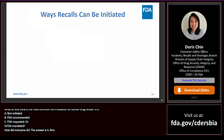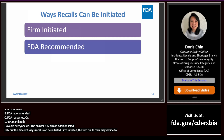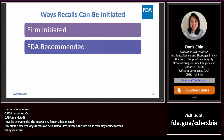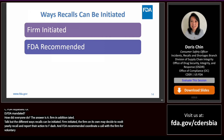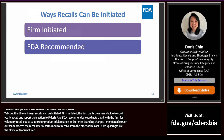Firm-initiated recalls are ones where the firm on its own may decide to voluntarily recall and report their action to FDA. FDA-recommended recalls are ones where ORA Farm will coordinate a call with CDER and the firm to recommend a firm voluntarily recall due to information supporting product adulteration and/or misbranding charges. Our team processes recall referral forms received from offices within CDER's Office of Compliance, such as the Office of Manufacturing Quality, Office of Unapproved Drugs and Labeling Compliance, and Office of Compounding Quality and Compliance. The recall is still considered a voluntary decision by the firm.